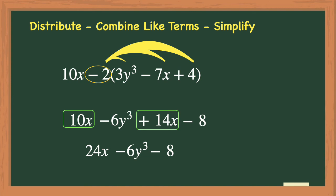However, some teachers can be picky about writing your expressions using the correct order, which we do not have here. So we will fix this by switching the order of negative 6y cubed and 24x. Negative 6y cubed needs to be the first term because the variable y has an exponent of 3. And 24x needs to follow negative 6y cubed because its variable x does not have an exponent. And constants like negative 8 always go last.